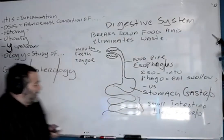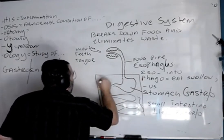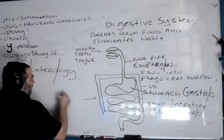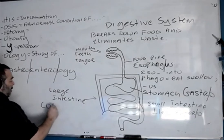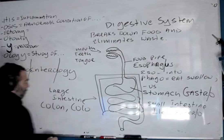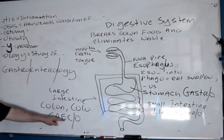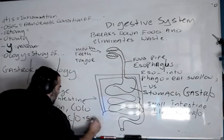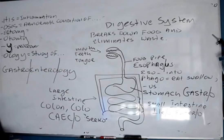Now, the small intestine connects to a thicker pipe that goes up, across, and down, making a little turn — and this is called the large intestine. We also call it the colon, or colo. There's one more word spelled C-A-E-C-O — it's not pronounced 'keiko,' it is actually pronounced 'ceco.' All these words mean large intestine.